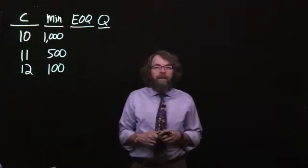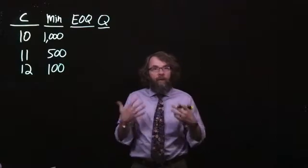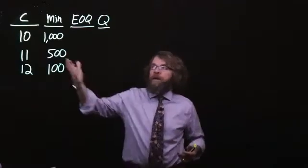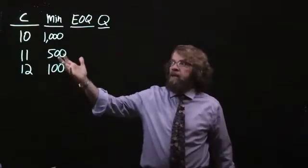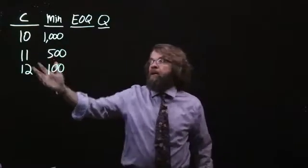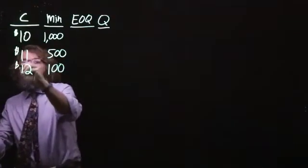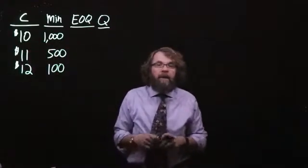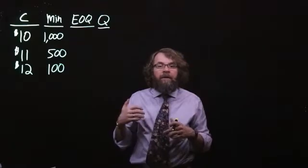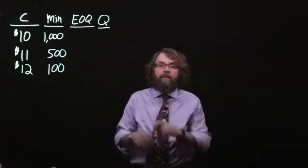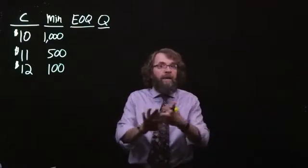In this video we will be considering an economic order quantity with a quantity discount. Our supplier says if we buy at least 100 units the price is $12. If we buy at least 500 the price is $11, and if we buy at least a thousand units the price is $10. Given this information, we want to find the order size that minimizes the total cost of ordering, holding, and the cost of the goods.